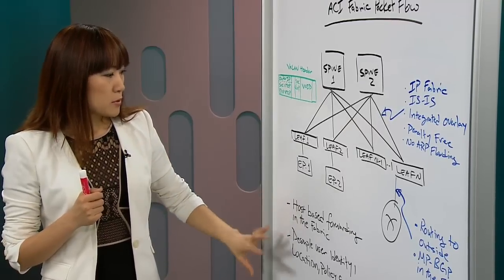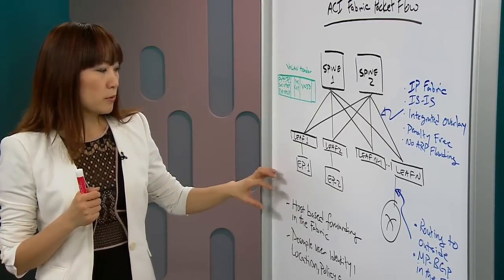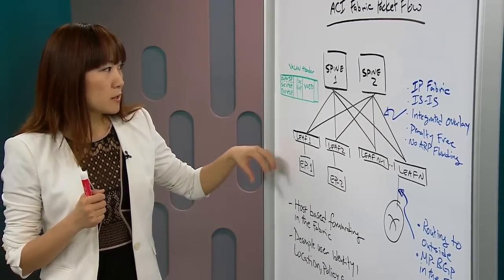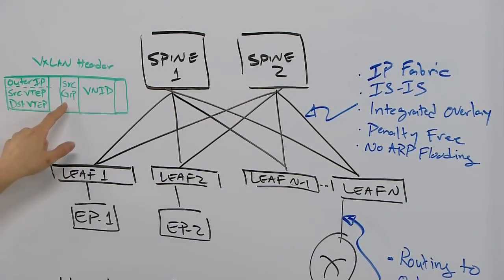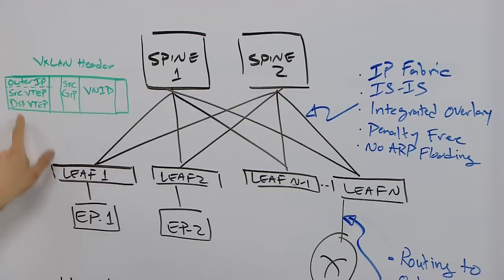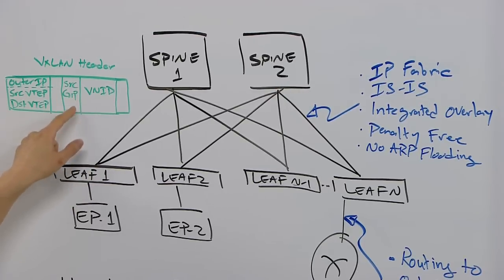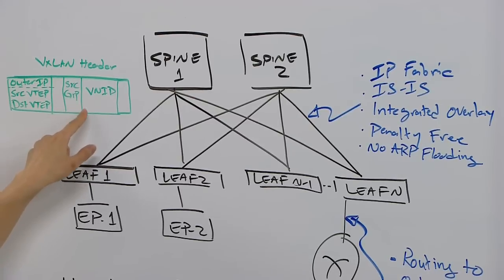And then we abstract the policy group information, abstract it and encode it into a field in the VXLAN header for source EPG group. And then policy will be applied based on the policy class or the EPG group ID.